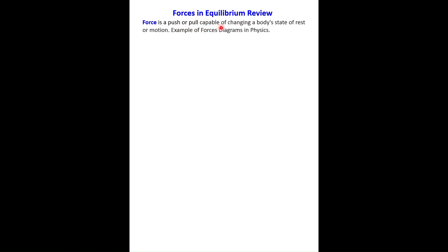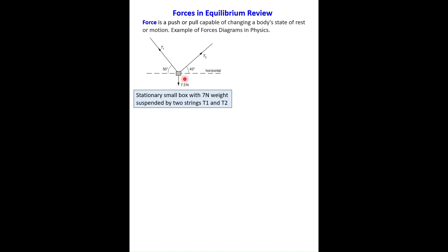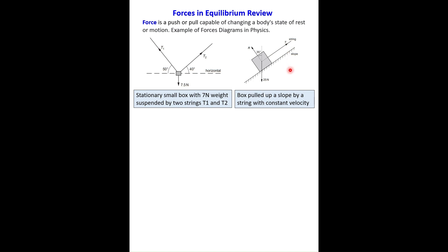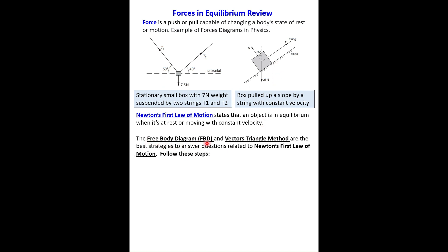Forces in equilibrium review. Force is a push or pull capable of changing a body's state of rest or motion. Here are example force diagrams: a stationary small box with 7 newtons weight suspended by two strings T1 and T2, and a box pulled up a slope by a string at constant velocity. Both are examples of Newton's first law, which states that an object is in equilibrium when it is at rest or moving with constant velocity. The free body diagram and vector triangle method are the best strategies for these questions.